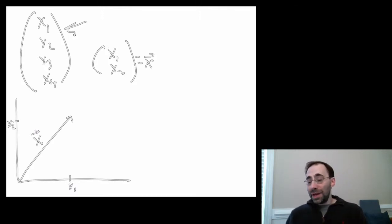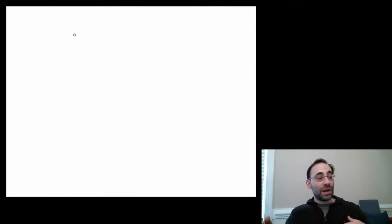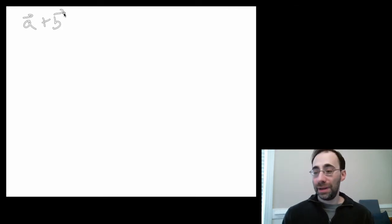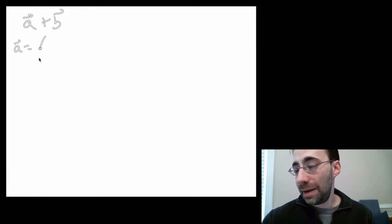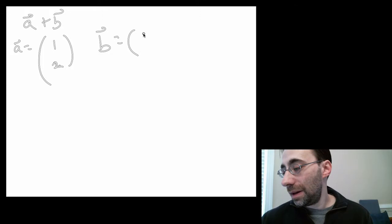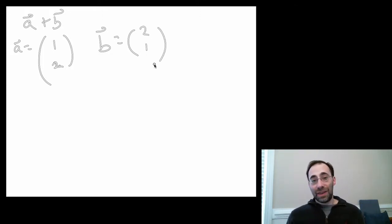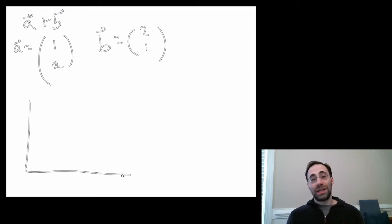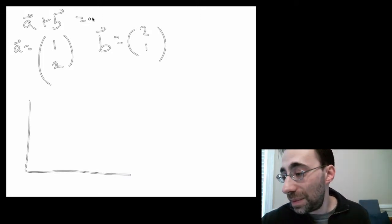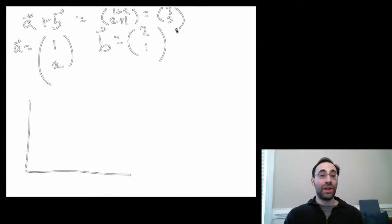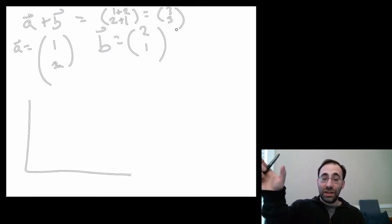But it's still helpful to understand how to manipulate vectors using a graphical approach. Let's start with the simplest operation: addition. Let's see how to add two vectors, A plus B, using real numbers. Let A be the vector (1, 2) and B be (2, 1). Looking at it component-wise, you add vectors by adding each corresponding component. So A plus B is (1+2, 2+1) = (3, 3). That is literally all there is to it.